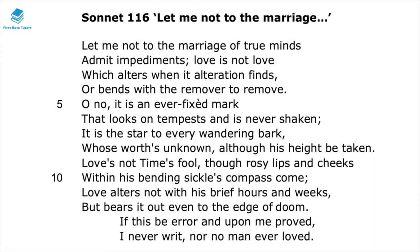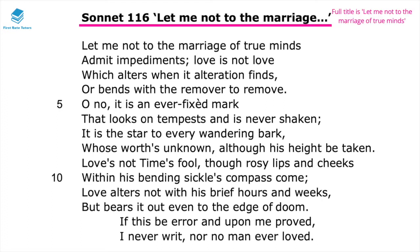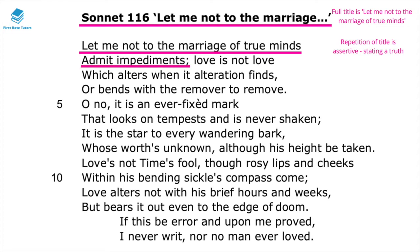This poem is a sonnet about love, and Shakespeare's message concerns true love. The full title is 'Sonnet 116: Let Me Not to the Marriage of True Minds,' which is repeated in line one and further emphasized by 'admit impediments.' This opening declarative statement is essentially saying there's no reason why two people in love should not be together. The use of the first person pronoun emphasizes the speaker's own perspective — we can assume the speaker is Shakespeare himself.